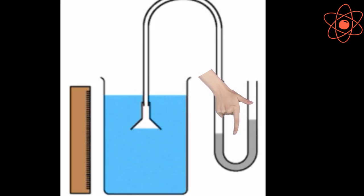This difference between the water level in the two arms of the u-tube is the measure of the pressure exerted on the rubber membrane.